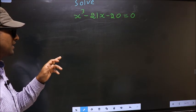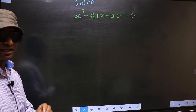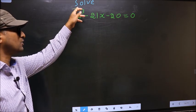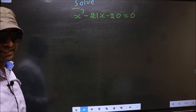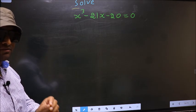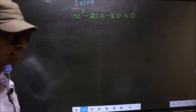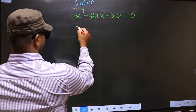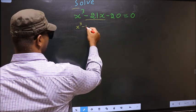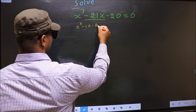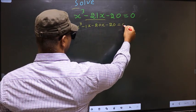Solve x³ - 21x - 20 = 0. We need to find the values of x. For that, we should change the x term. In place of -21x, I write -1x - 20x - 20 = 0.